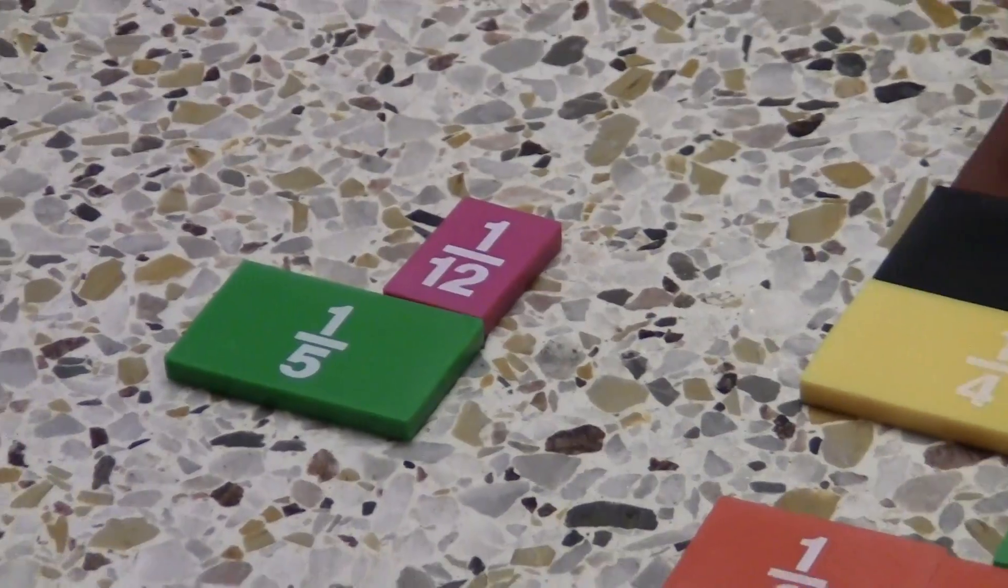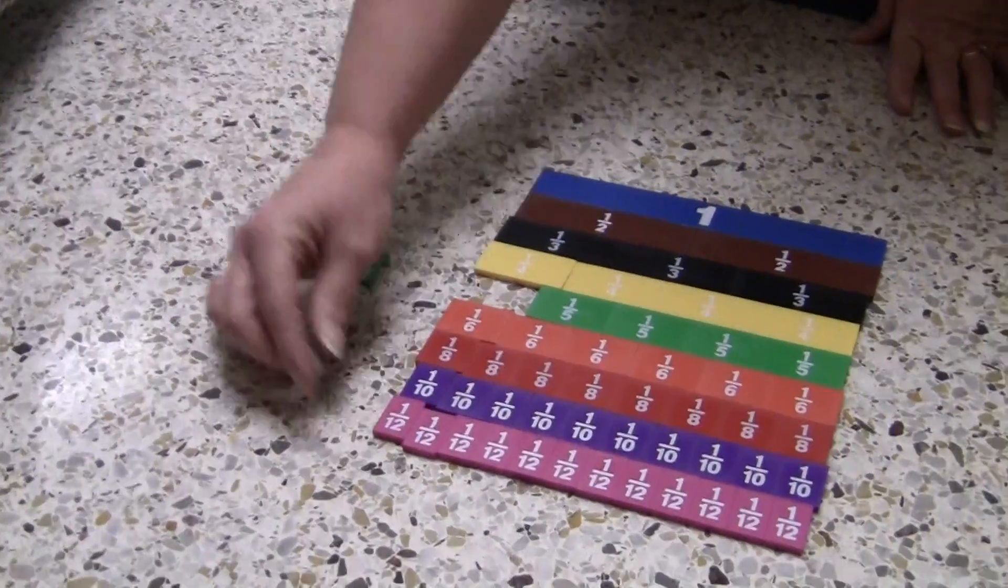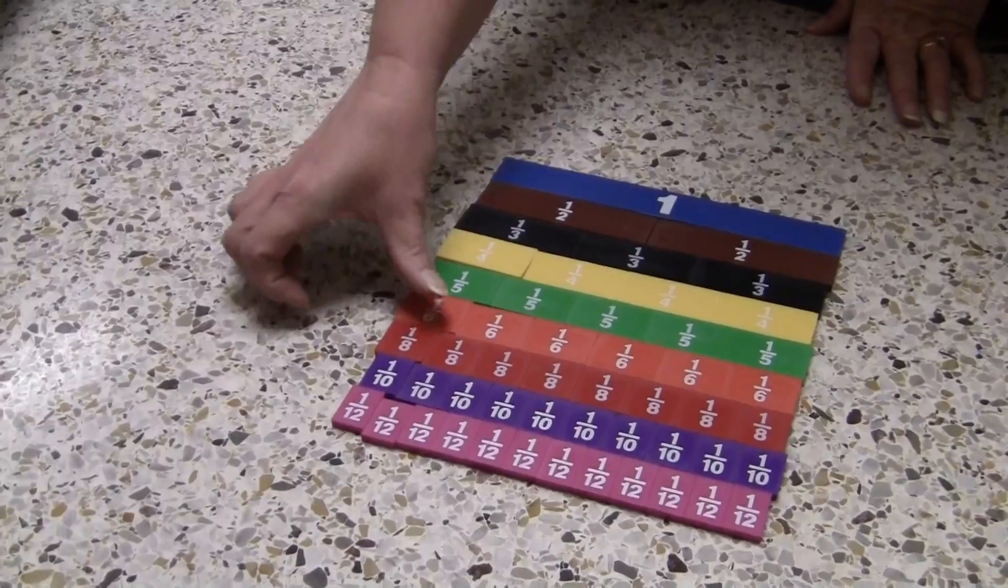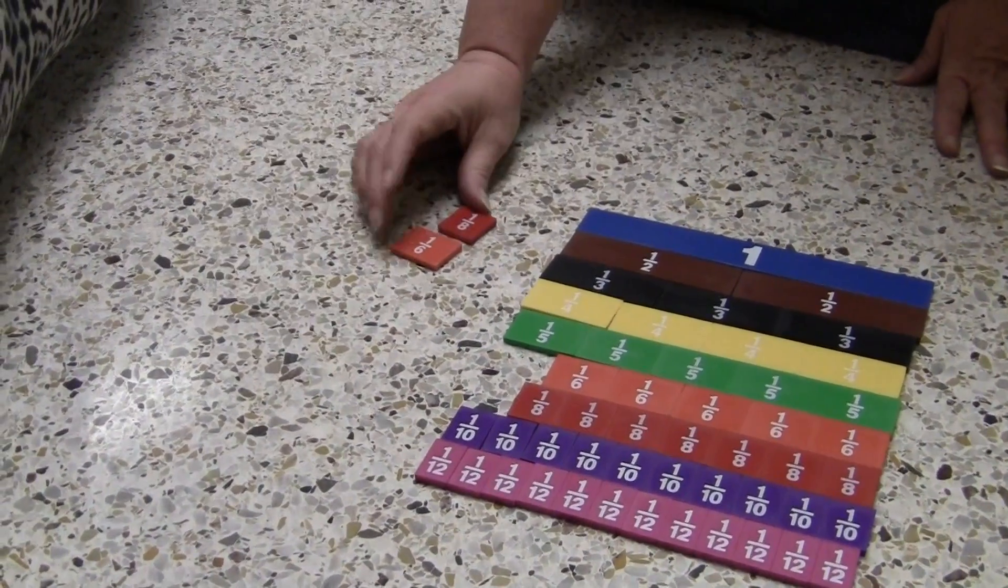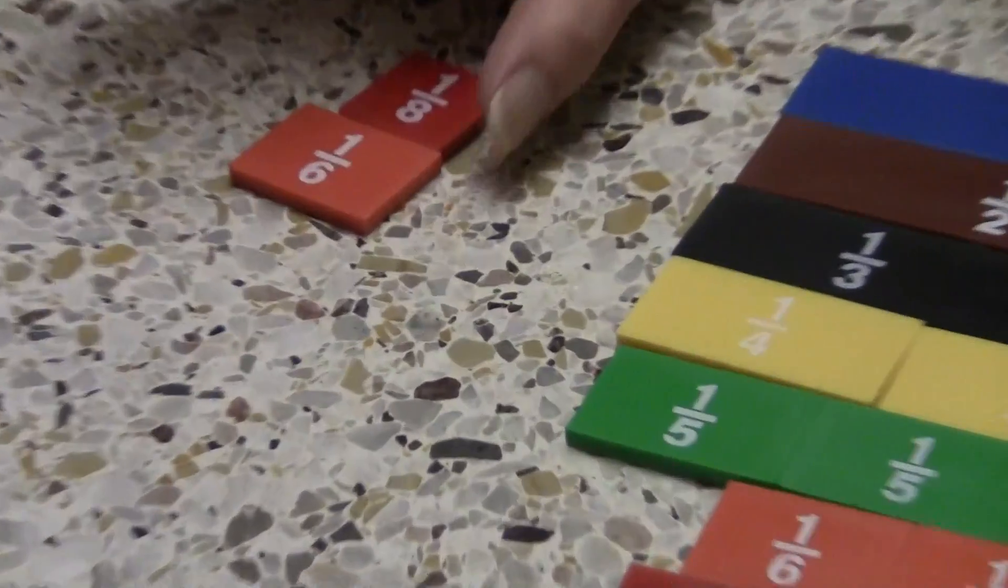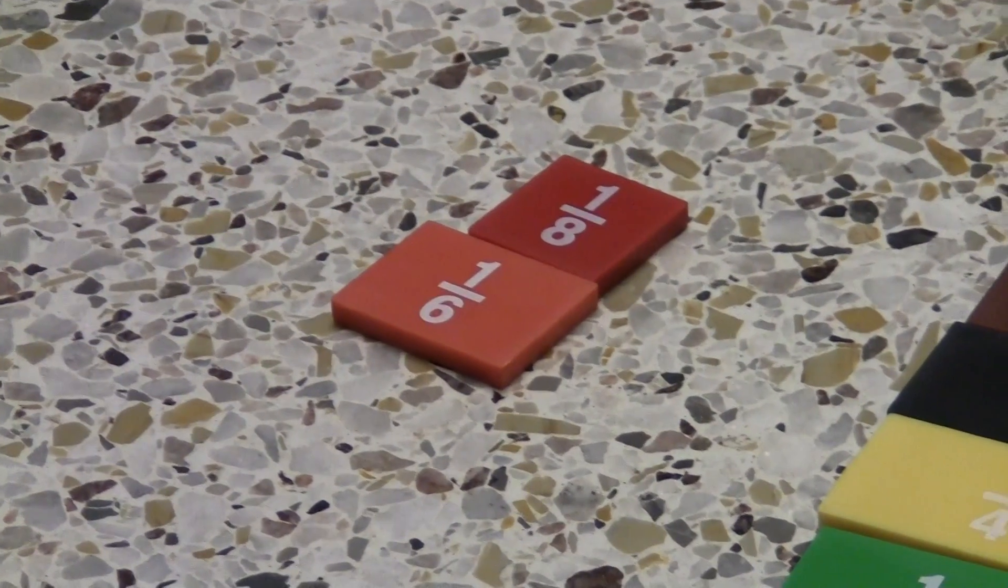Then you can ask students about one-sixth and one-eighth. They would pull out the fractions and stack them on top of each other and see that one-sixth is bigger than one-eighth, even though six is a smaller denominator.